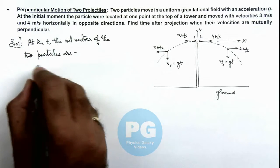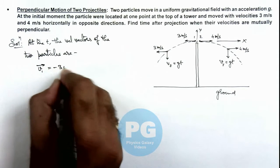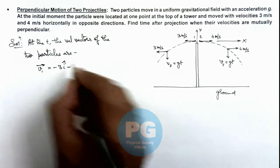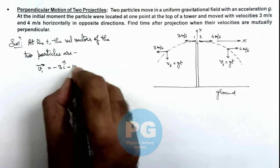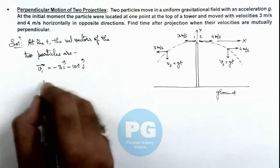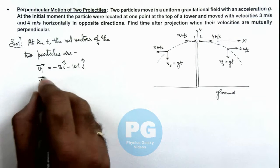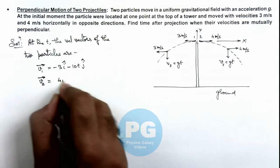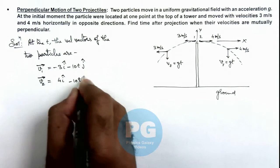Here v1 vector we can write as minus 3 i cap minus gt. We can take g as 10, so this is 10t j cap. And v2 vector we can write as 4 i cap minus 10t j cap.